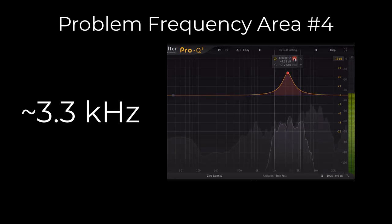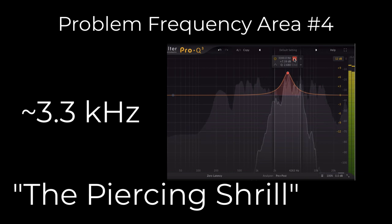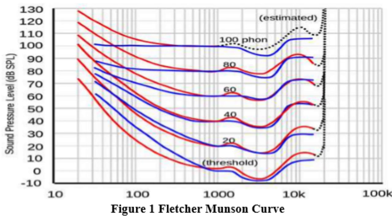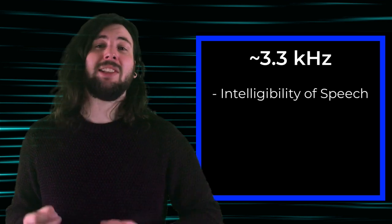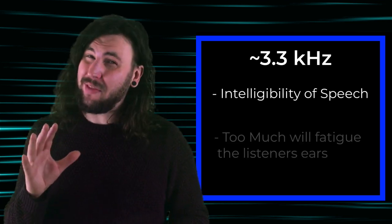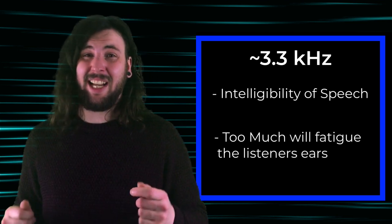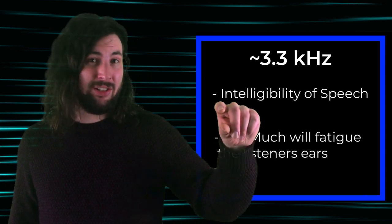Number four: 3.3 kilohertz — the piercing shrill. It's at this point in the Fletcher-Munson curve where our human ears are most sensitive. This is also the frequency of your average smoke detector, doorbell, or siren — sounds designed to get your attention. It's incredibly necessary for the intelligibility of speech and presence, but too much of this frequency will fatigue the listener and have them reaching to turn down the tunes.